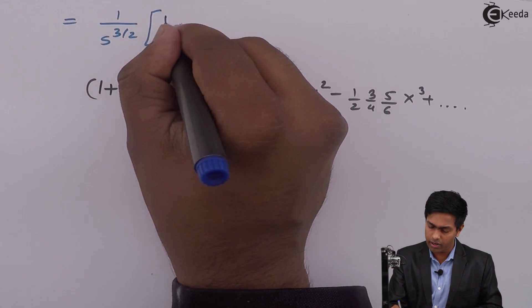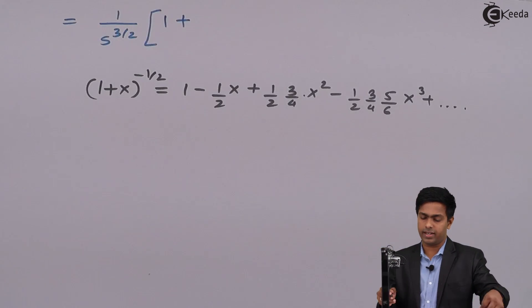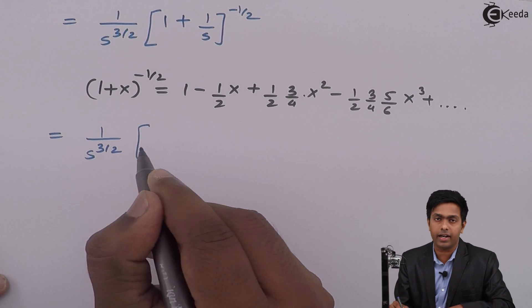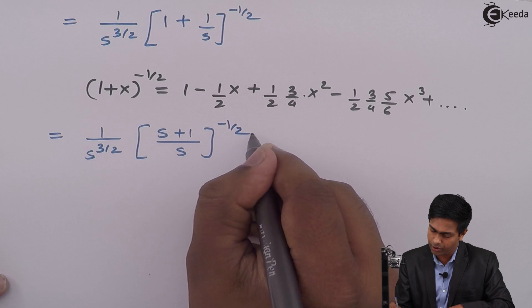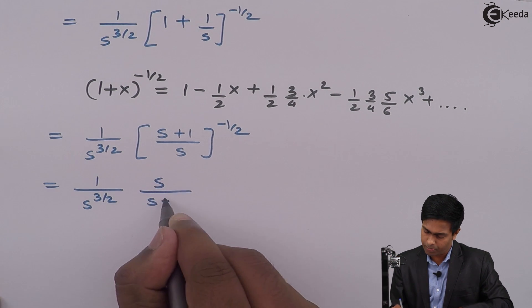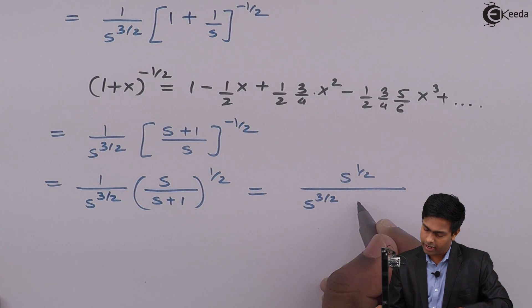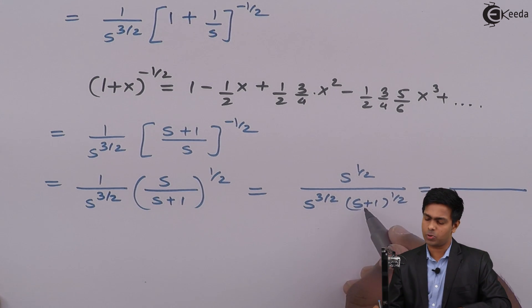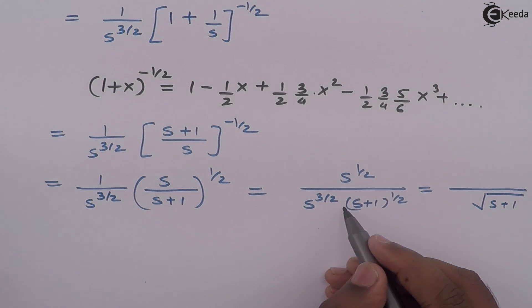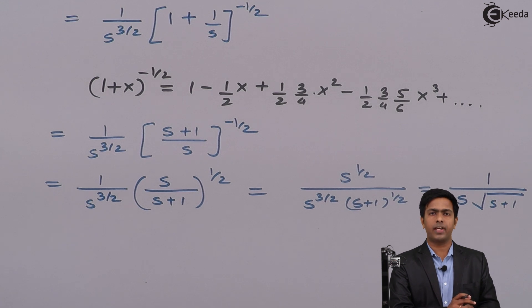This series in the bracket is recognized as the expansion of (1 + 1/s)^(−1/2), where x = 1/s. So we get (1/s^(3/2)) × s/(s+1)^(1/2), which simplifies to s^(1/2) / (s^(3/2) · √(s+1)). Since s^(3/2)/s^(1/2) = s, the final answer is: L{erf(√t)} = 1 / (s·√(s+1)). Thank you.